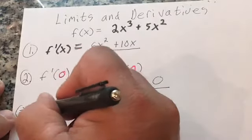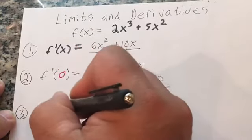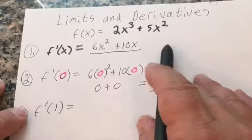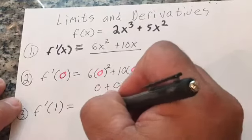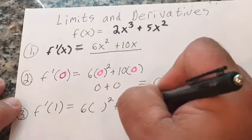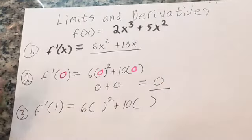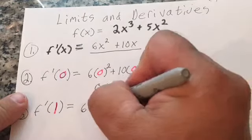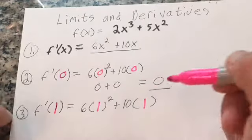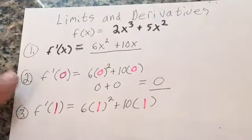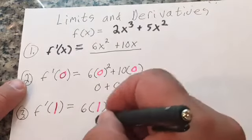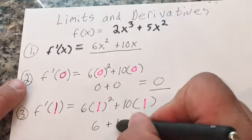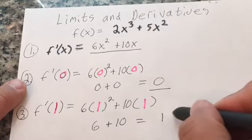Number three: find f prime of one. I have 6x squared plus 10x, so I plug in one. One squared is one, so 6 times one is 6; 10 times one is 10. That's going to equal 16.